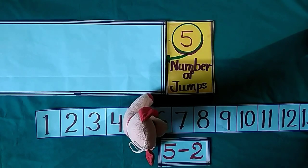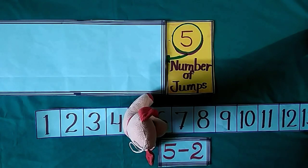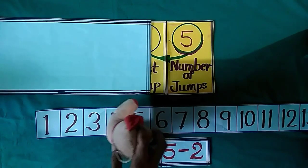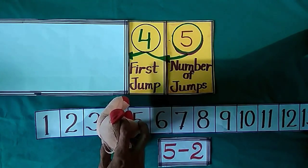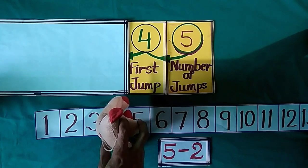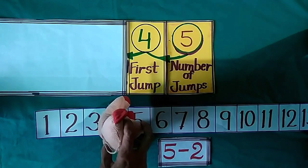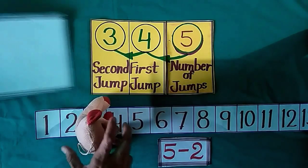Now Jimmy stands at 5 and he wants to take 2 backward jumps. When he takes his first jump, he reached at 4. And when he takes his second jump, he reached at 3.